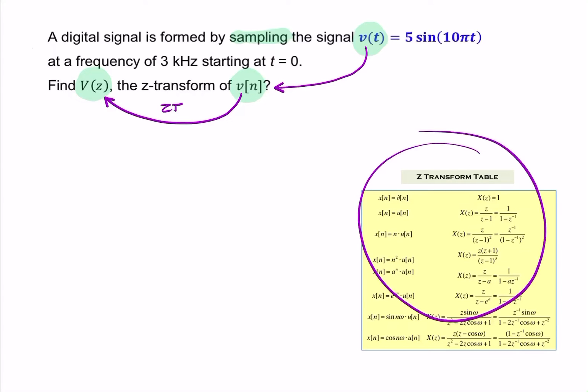But the first step is actually a sampling process, and to do that, we need to replace t with n times uppercase T, where uppercase T is 1 over the sampling rate. So, in this case, it's 1 over 3,000.